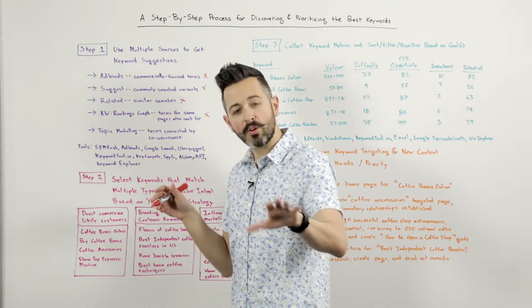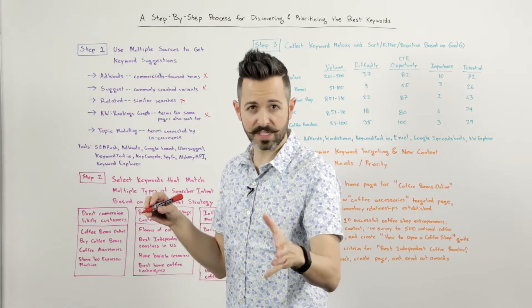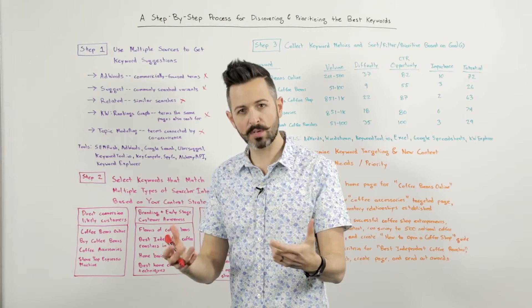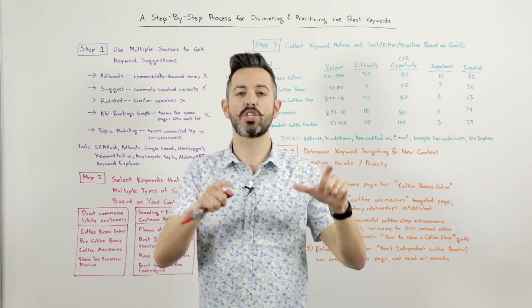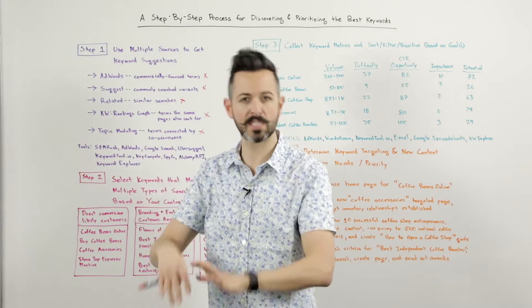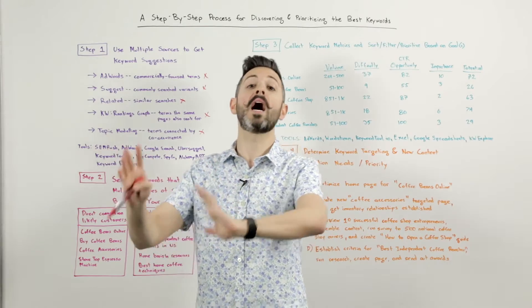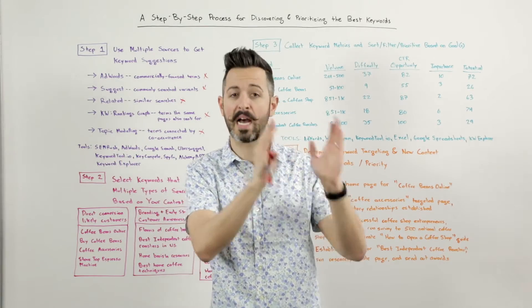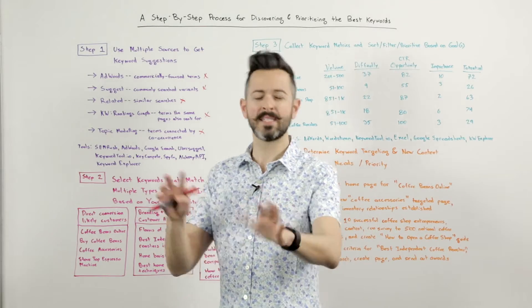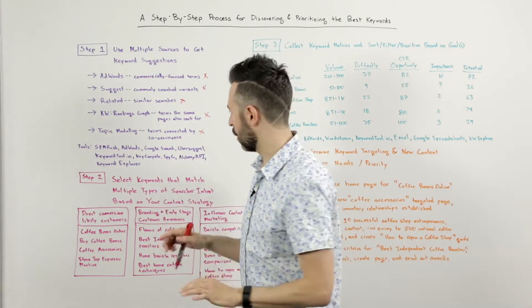Another one that's very cool and very sophisticated that some SEOs are doing is topic modeling-based keywords. This is essentially saying, hey, show me terms and phrases that co-occur on lots of documents, high-quality documents, hopefully, with the term or phrase that I'm targeting. You can find those through tools like Alchemy API. It's a little challenging to use, but there you go.